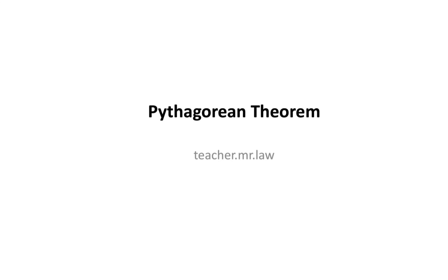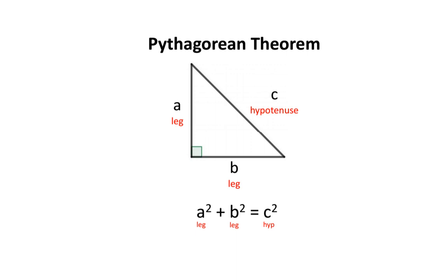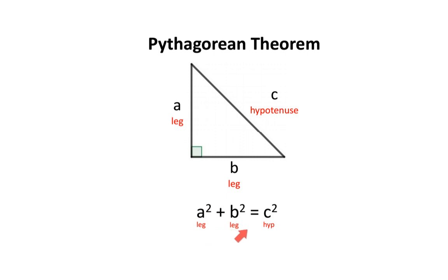In today's lesson, we'll be learning about the Pythagorean Theorem. In a previous lesson, we learned that the Pythagorean Theorem is a relationship between the legs and hypotenuse of a right triangle. In other words, a squared plus b squared equals c squared.